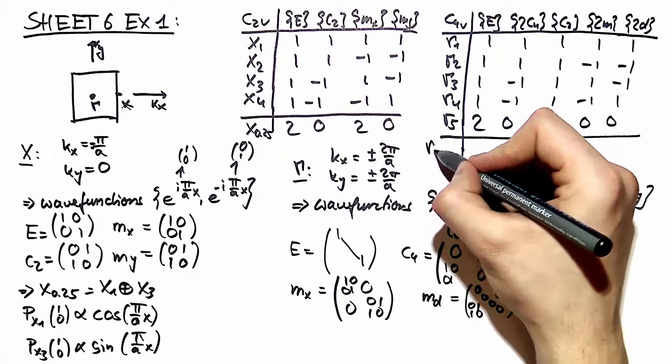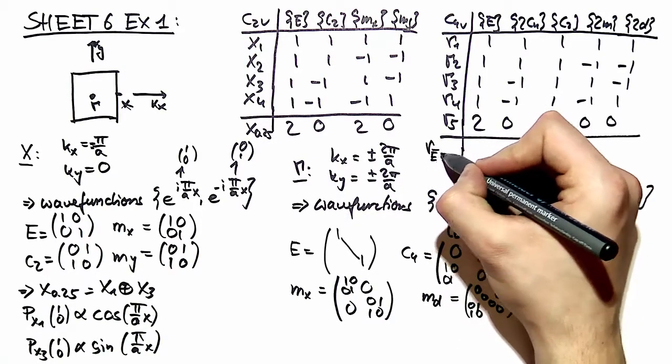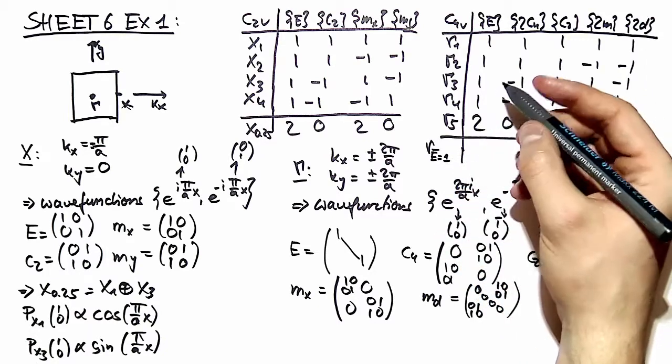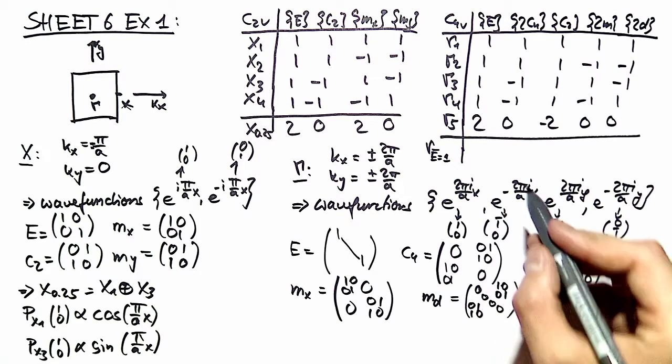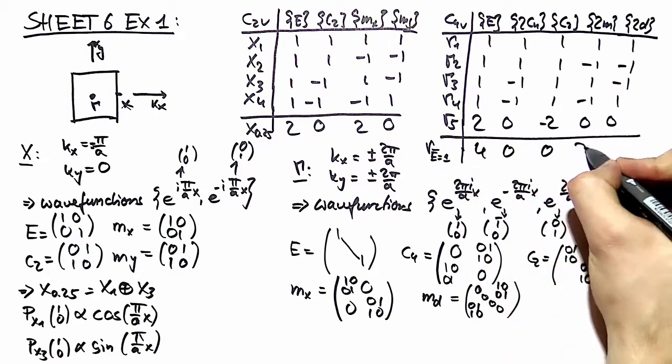This is our gamma E equal to 1 representation. And looking at these matrices gives you characters: 4, 0, 0, 2, 0.